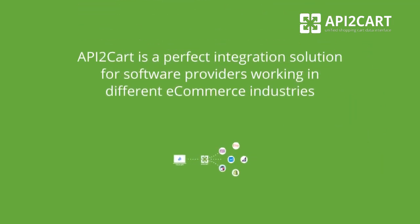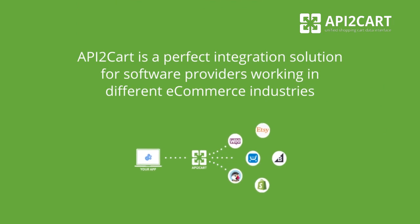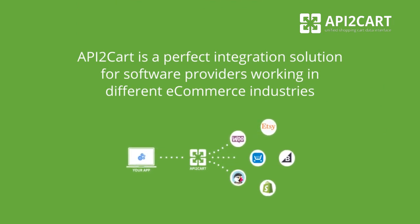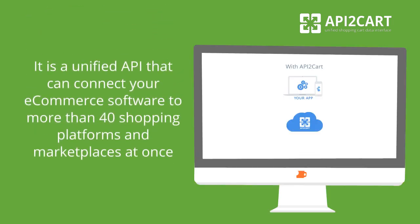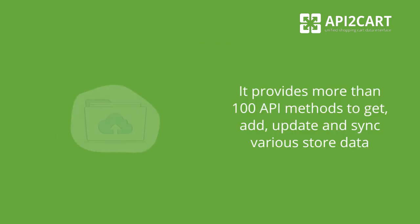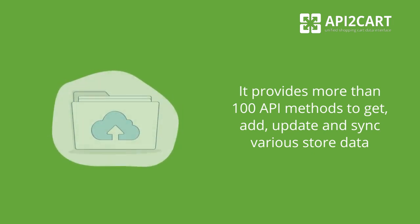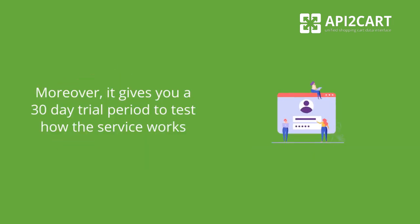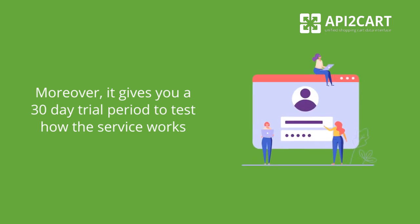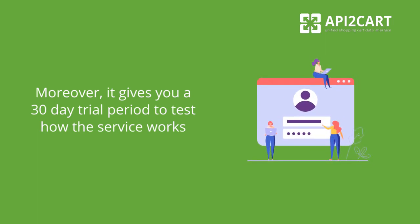Out of all the third-party service providers, API2Cart is a perfect integration solution for software providers working in different e-commerce industries. It is a unified API that can connect your e-commerce software to more than 40 shopping platforms and marketplaces at once. It provides more than 100 API methods to get, add, update, and sync various store data. Moreover, it gives you a 30-day trial period to test how the service works.